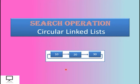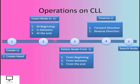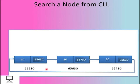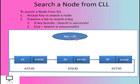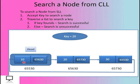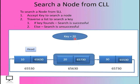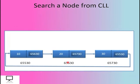Now let's look at the search operation on a circular linked list. To perform a search, we accept a key from the user — let's say the key is 20. We start from the head node and compare each node's information part with the key. If the key is found, the search is successful; otherwise it is unsuccessful. Traversing from head: the first node is not equal to key 20, so we move forward. The second node equals 20 — the search is successful.